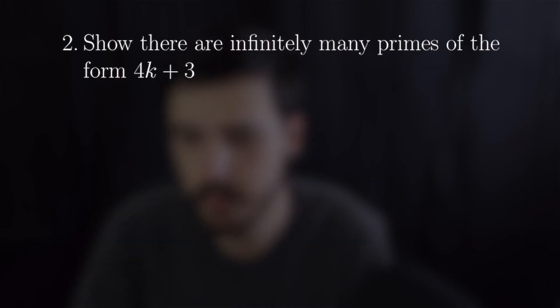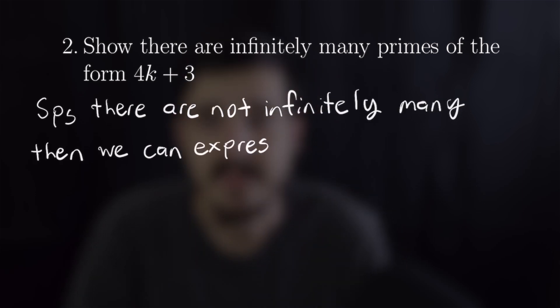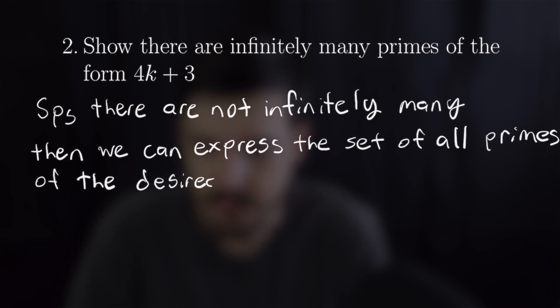For our second example we're going to want to show that there are infinitely many primes of the form four k plus three. So we're going to begin by supposing that that is not the case. We're going to suppose there are not infinitely many which means we can express it as a finite set starting with three and going all the way up to p_n.